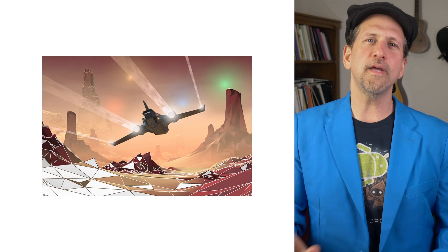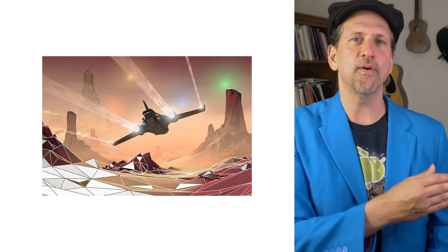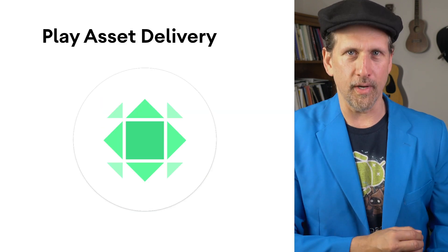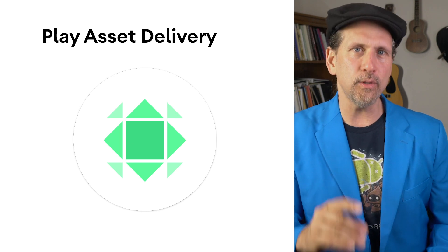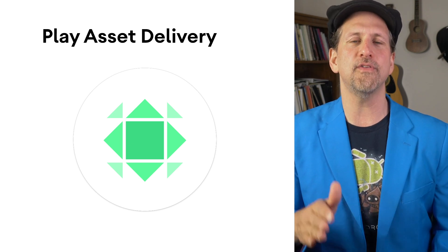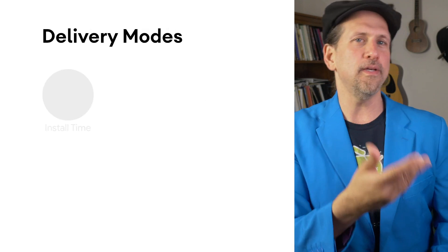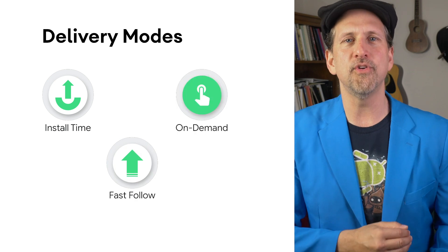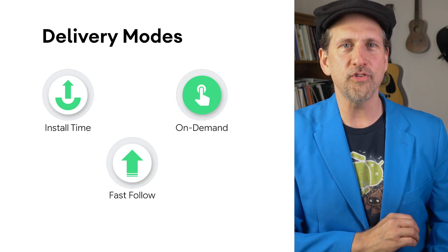We're also working to make it easier to get your games to as many devices as possible, helping you to scale your reach. We've launched Play Asset Delivery, building on the App Bundle format to allow you to publish a single artifact that can chunk up to two gigabytes of your game resources into asset packs. These asset packs can be delivered either as part of the initial install, shortly after install, or on demand during gameplay, with up to one gigabyte delivered as part of the initial install.